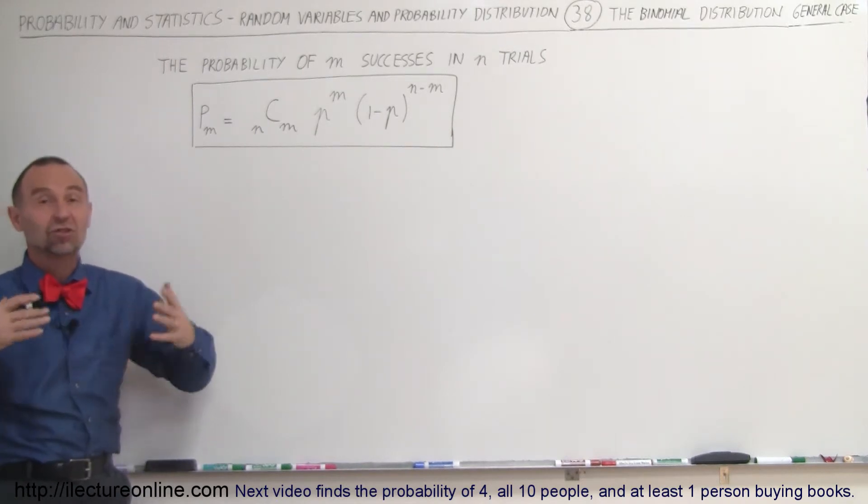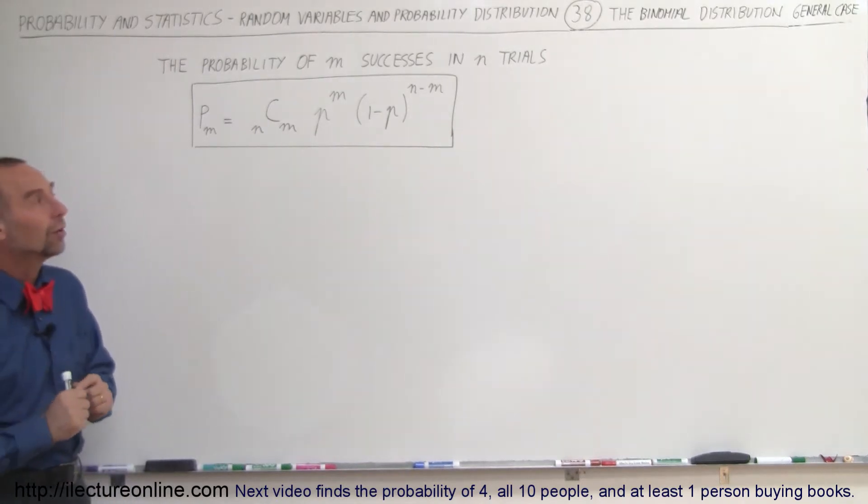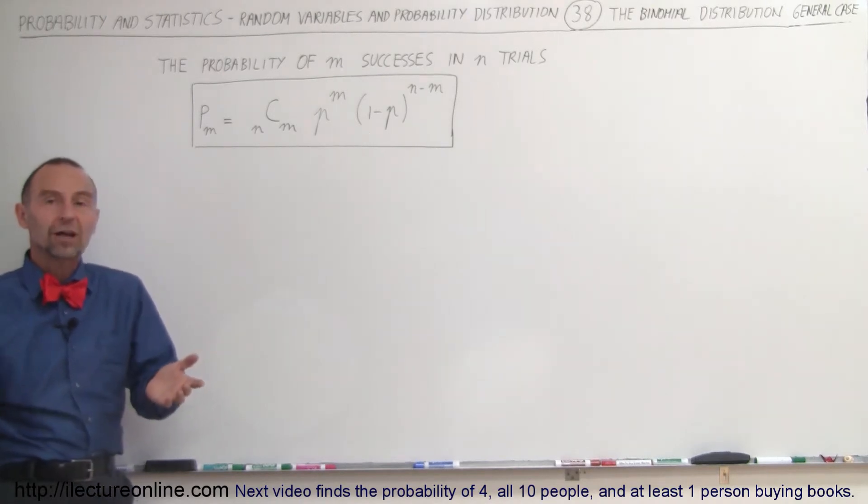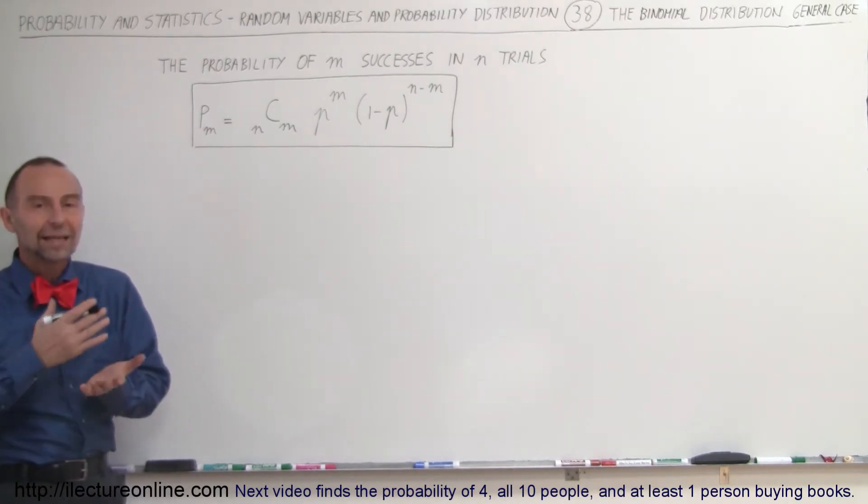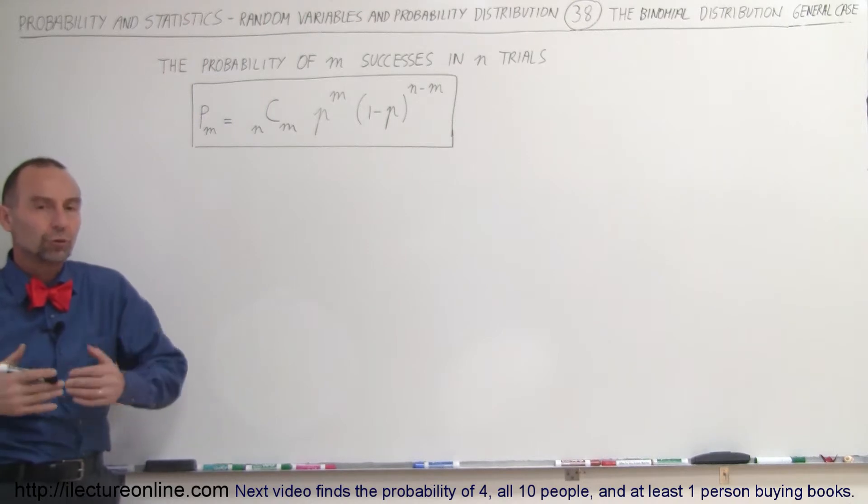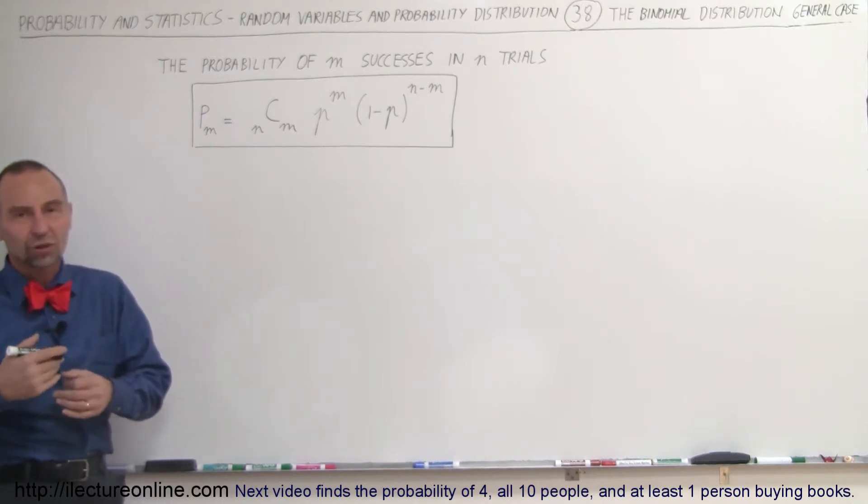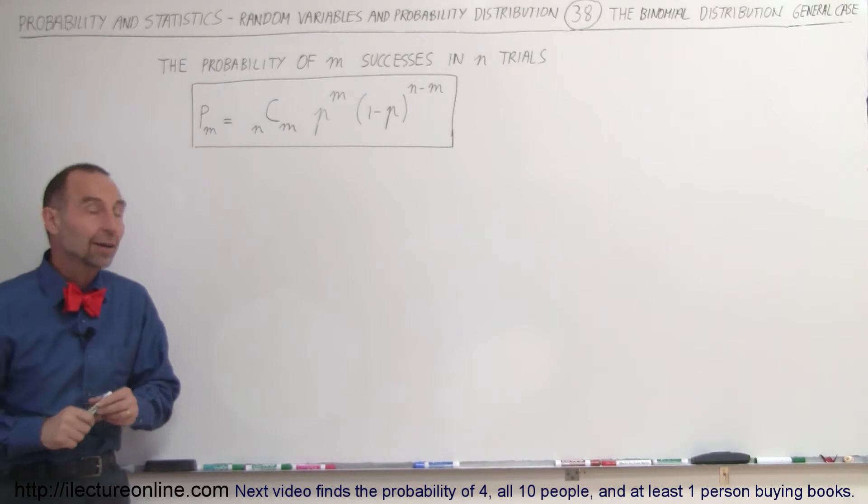In the previous video we gave you the basic understanding of what a binomial distribution was and we did a simple example by tossing a coin five times and then seeing the binomial distribution for success, which in this case was tossing heads.